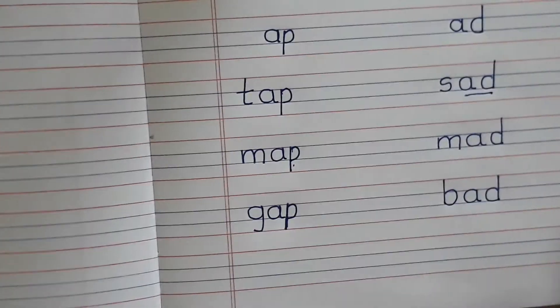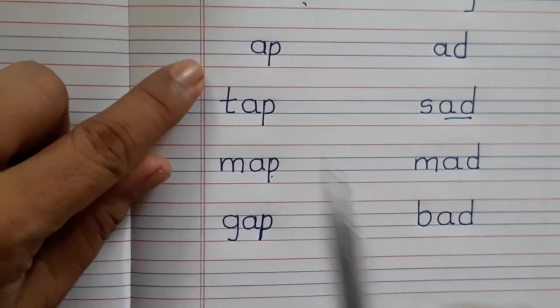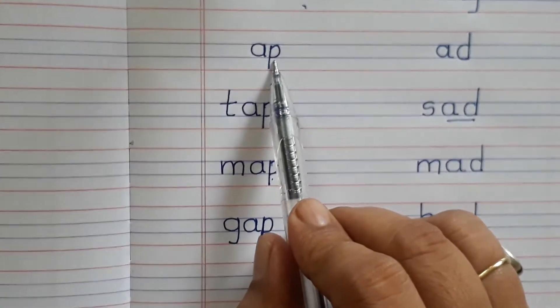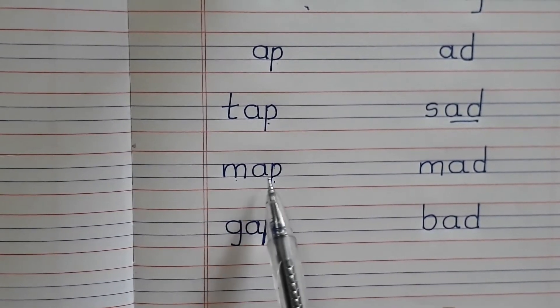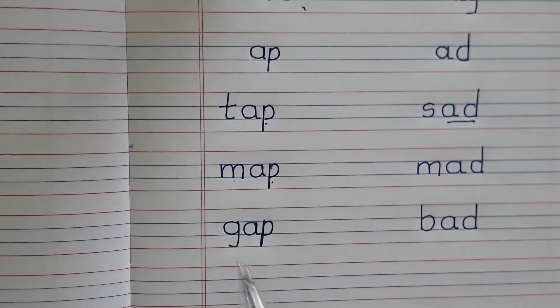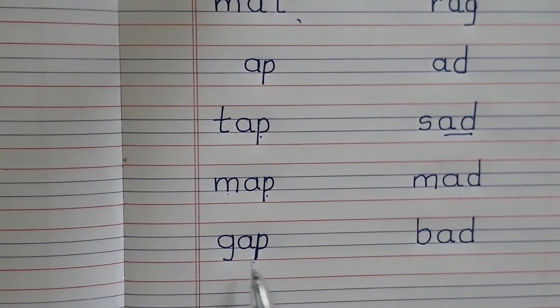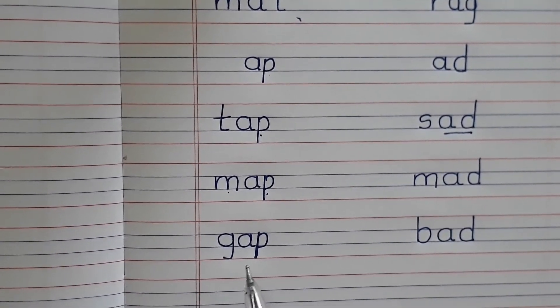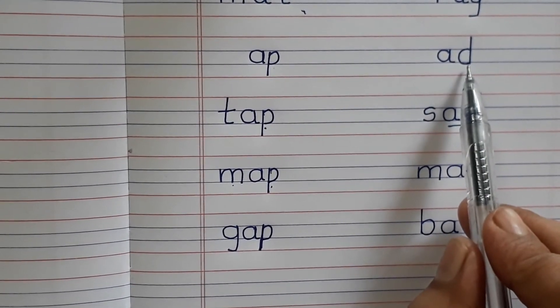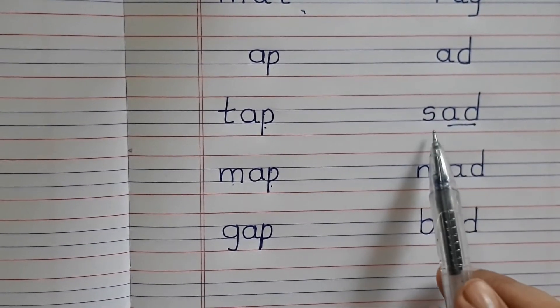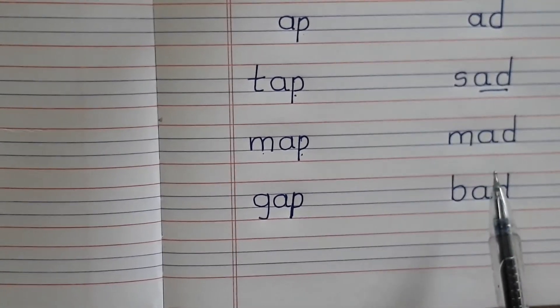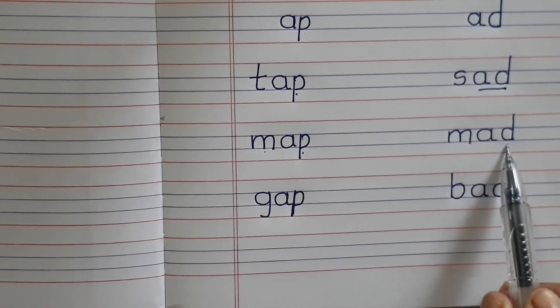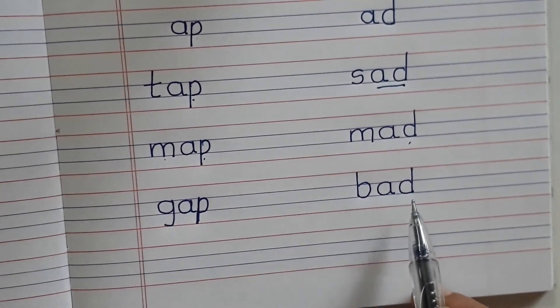Okay, let's revise today's spellings. Spellings A-P, A-P, A-P, TAP. M-A-P, A-P, M-A-P. G-A-P, G-A-P, GAP. A-D, A-D, A-D. S-A-D, sad. M-A-D, mad. B-A-D, bad.